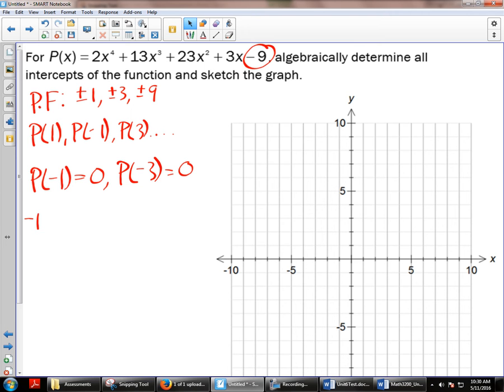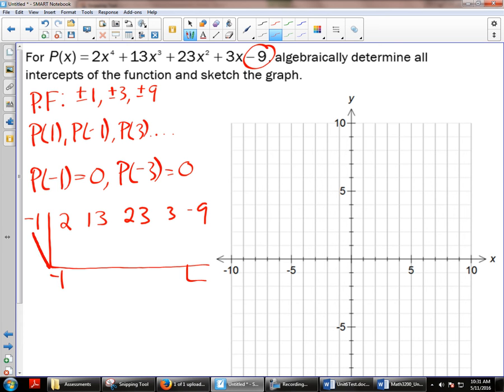I'm going to take my first one. It doesn't matter which one you choose actually. And I'm going to synthetically divide this quartic. I take the coefficients, and all of a sudden my marker changed, of course, being a nuisance. I take the coefficients and I write them out. So, 2, 13, 23, 3, negative 9. Good catch.